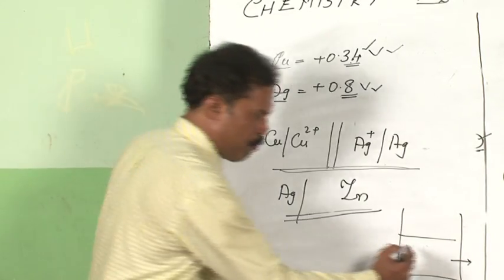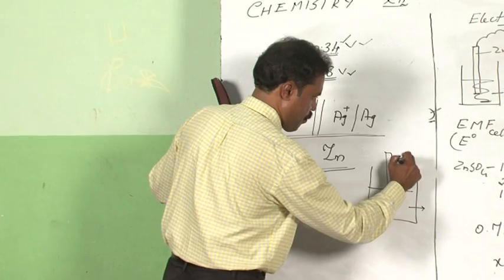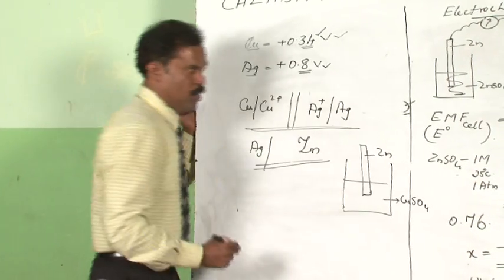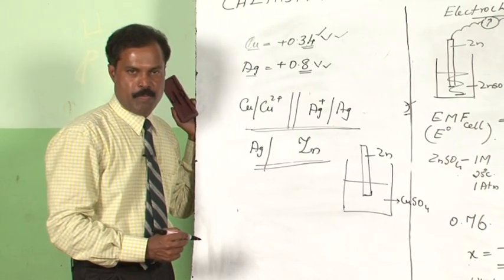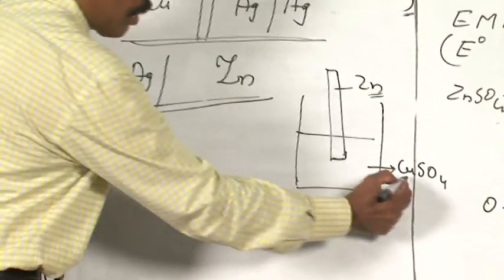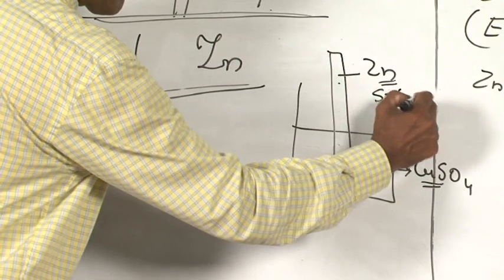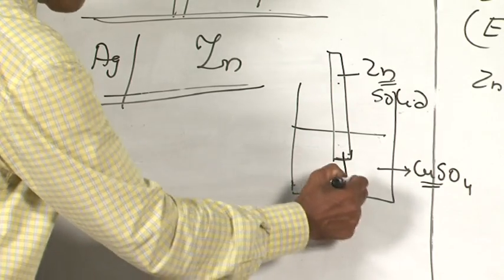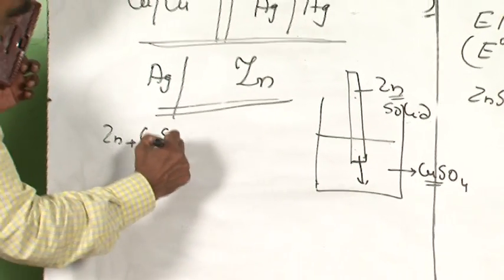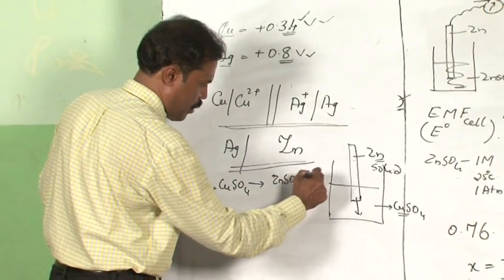So, suppose you put a piece of zinc in copper sulphate, you know there is going to be a reaction, because zinc has got more oxidation potential than copper. Zinc being a solid will react with the solution of copper sulphate. The reaction is basically zinc plus CuSO4 gives zinc sulphate plus copper.